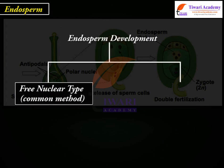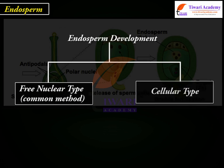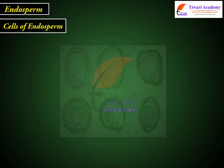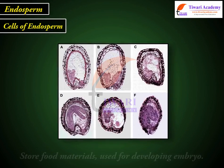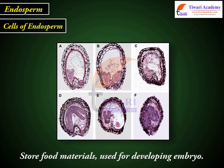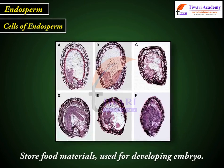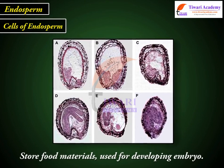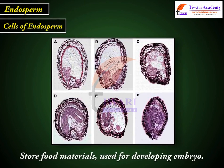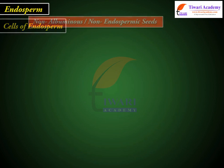Two types of endosperm development: 1. Free nuclear type — the common method. 2. Cellular type. Cells of endosperm store food materials and are used for nourishing the developing embryo.